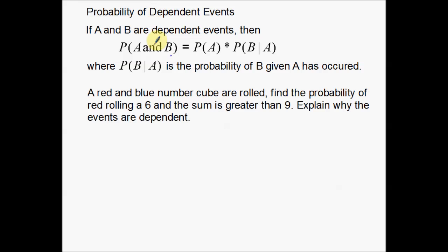We'll go through the notation first, then get to the example. If A and B are two dependent events, then the probability of both of them happening — event A and event B — is equal to the probability of the first one happening times the probability of the second one happening, assuming that the first one has already happened. This notation here is the probability of B given that A has occurred.